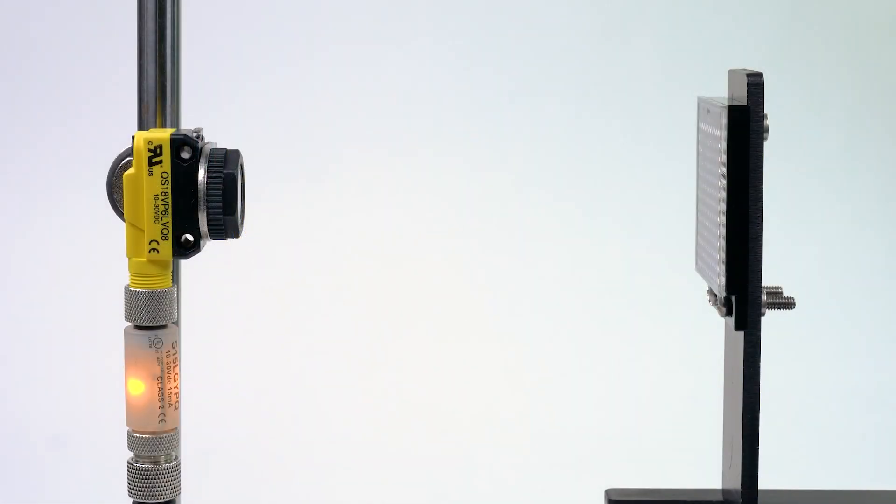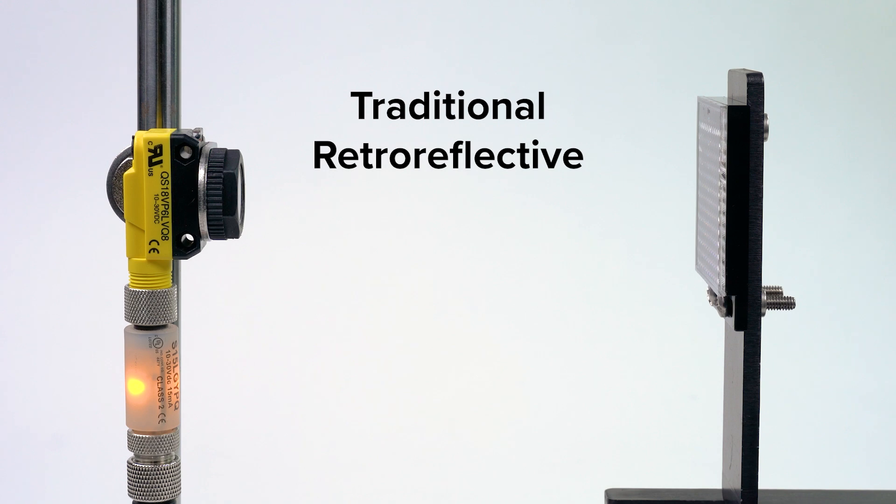Many of Banner's photoelectric sensors such as the QS18 sensor family include a variety of retro reflective models that largely fall into three categories: traditional retro reflective, polarized, and coaxial polarized.